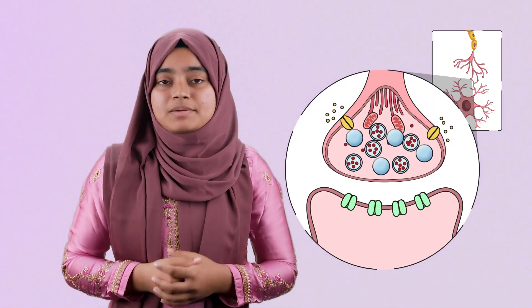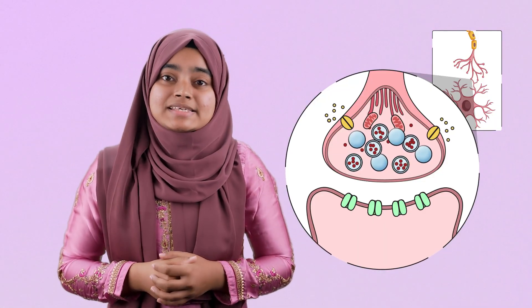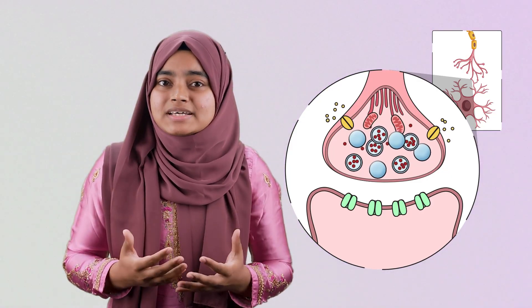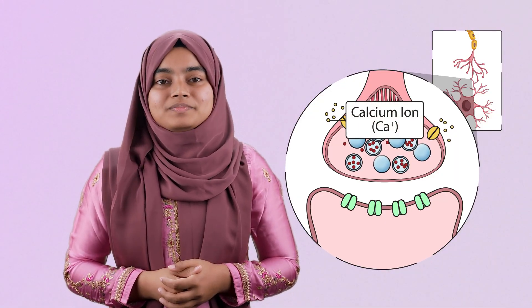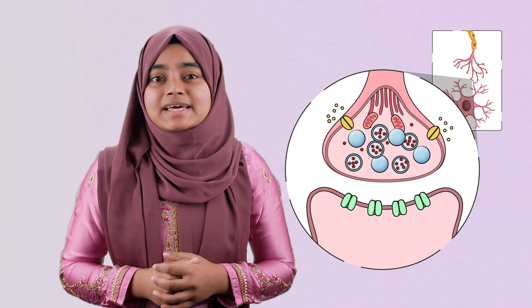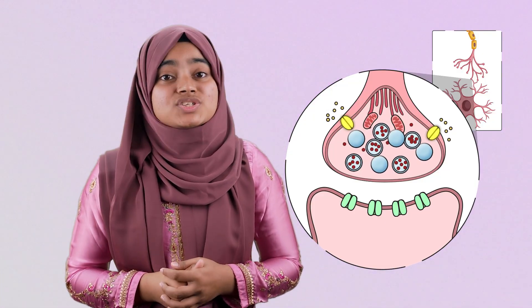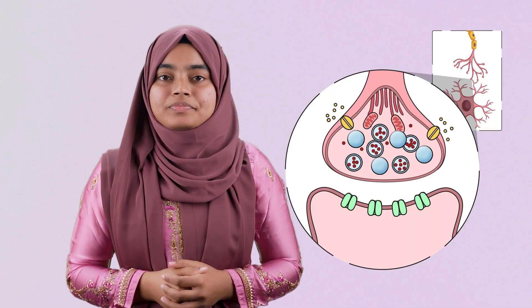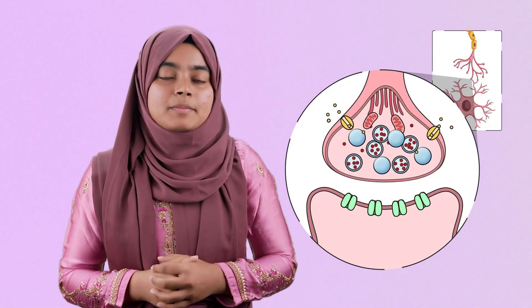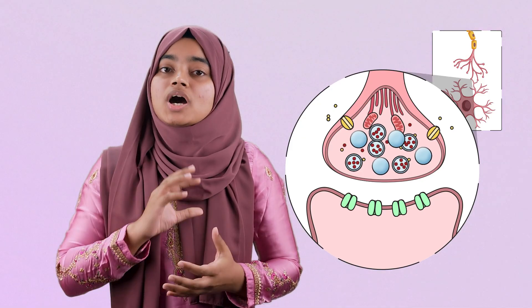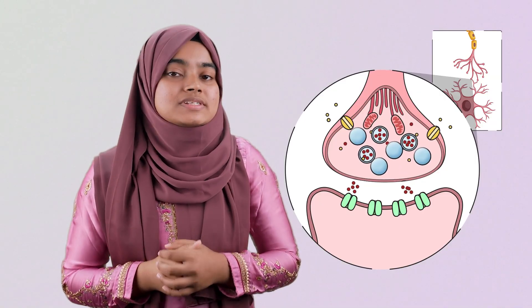Acetylcholine is formed in the pre-synaptic neuron and stored in small vesicles. What we need to do is release this acetylcholine into the synaptic cleft. However, these vesicles cannot move towards the cleft by themselves — they need the help of calcium ions. When impulse or action potential reaches the axon terminal, transmembrane proteins in the axolemma that act as channels for calcium ions will open up, allowing calcium ions to enter the axon terminal from the extracellular fluid. These calcium ions then cause fusion of the synaptic vesicles to the membrane of the axon terminal, and release of acetylcholine into the synaptic cleft occurs.